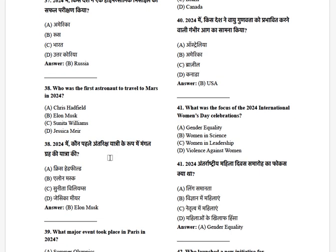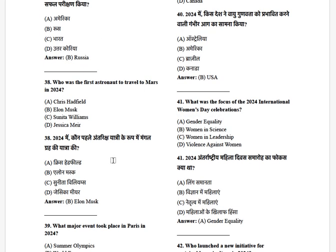Who was the first astronaut to travel to Mars in 2024? The options are: Chris Hadfield, Elon Musk, Sunita Williams, and Jessica Meir. The answer is Elon Musk.